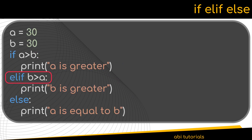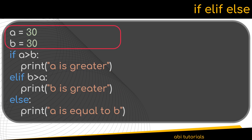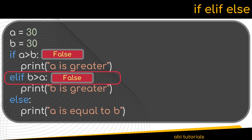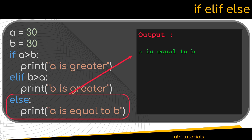The next statement we are going to see is the elif statement. In certain cases, we may need to validate multiple conditions and a single if-else statement may not suffice. In such scenarios, we can use the elif statement as displayed here. In the given example, we have two variables a and b with the same value 30. The if statement evaluates if a is greater than b. Since a is not greater than b, the control flow moves to the elif statement where it evaluates whether b is greater than a. Even this evaluation returns false and the statement within the elif block is also skipped. Since the elif also failed, the control flows to the else statement and the statement within the else block gets executed. The output will be the content of the else block as displayed here.